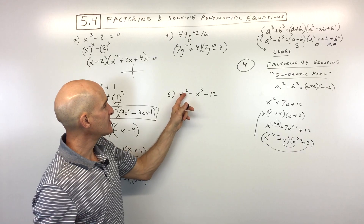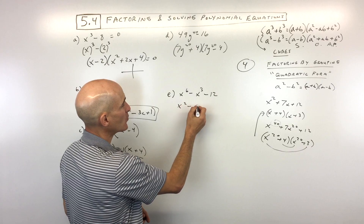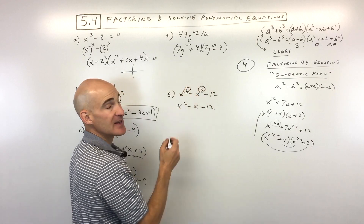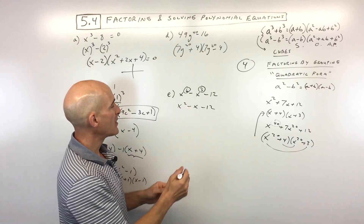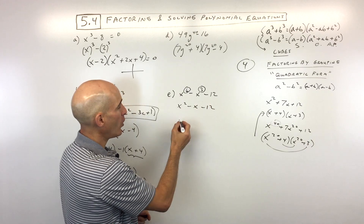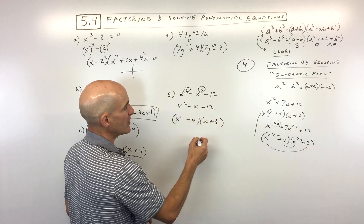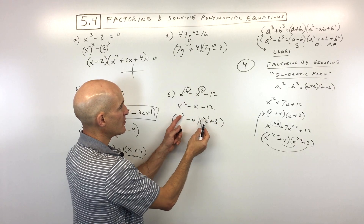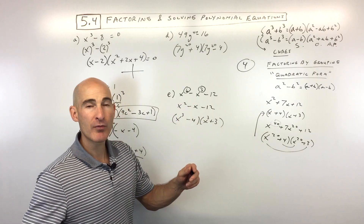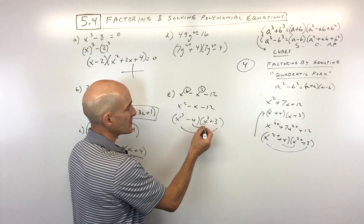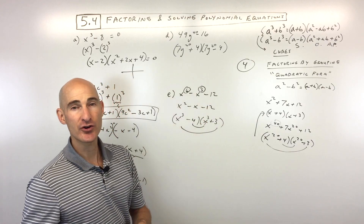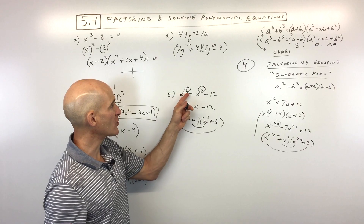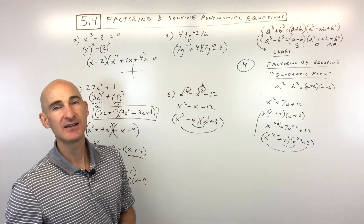For letter E, x to the 6 minus x cubed minus 12: recognize it's in quadratic form because the middle exponent, 3, is half the leading exponent, 6. Factor it just like x squared minus x minus 12. What multiplies to negative 12 but adds to negative 1? That's negative 4 and positive 3. So the answer is x cubed minus 4 times x cubed plus 3. When you multiply, 3 plus 3 gives x to the 6, and the inner and outer terms give negative 1 times x cubed.